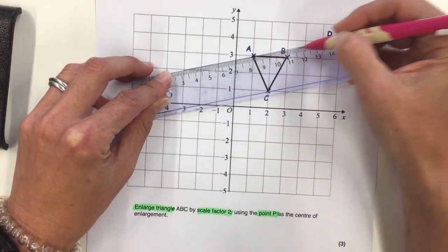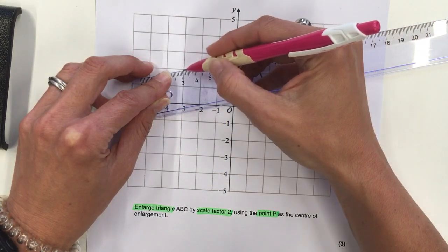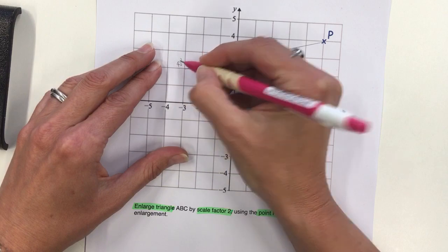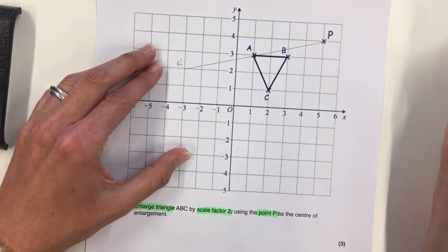We draw a line between P and the vertex and then extend it to be twice as long. I'm going to call that A dash because that's the corresponding vertex to the original shape.